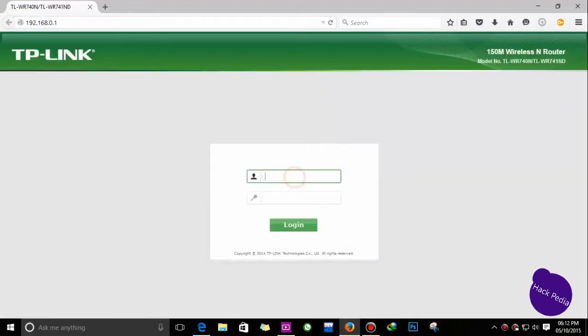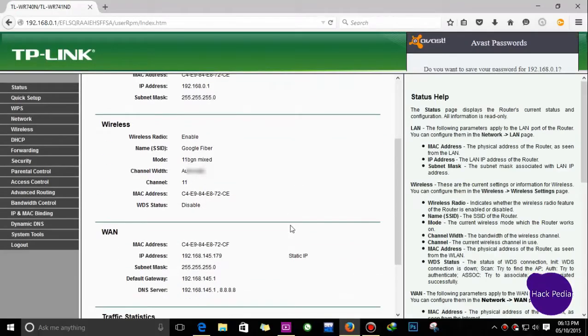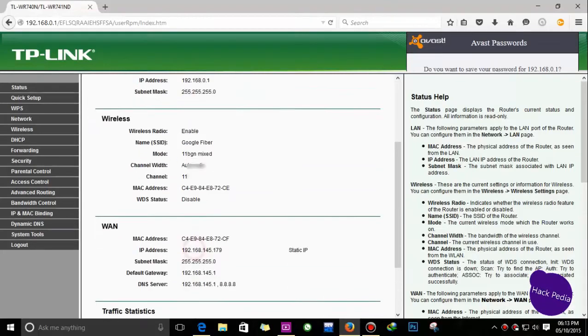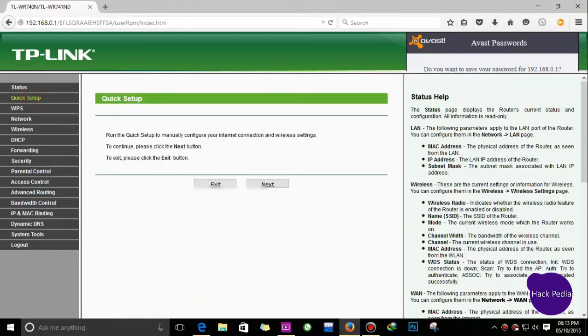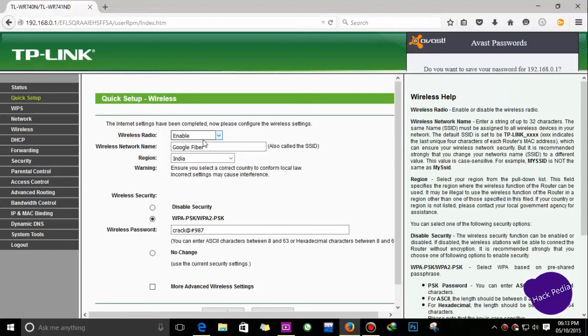The default username and password is admin and admin. Now login. I already configured it, but I want to show you where is the option you will get to configure the static IP. This is just the quick setup to give it a name and a password.